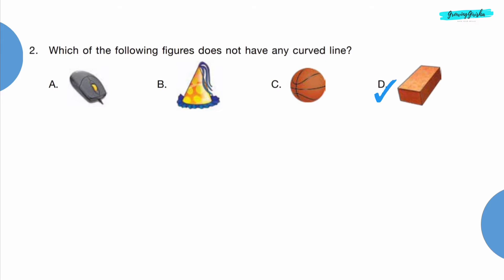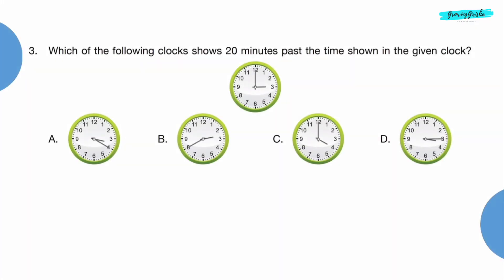Option D, brick, does not have any curved line. Question 3: Which of the following clocks shows 20 minutes past the time shown in the given clock?